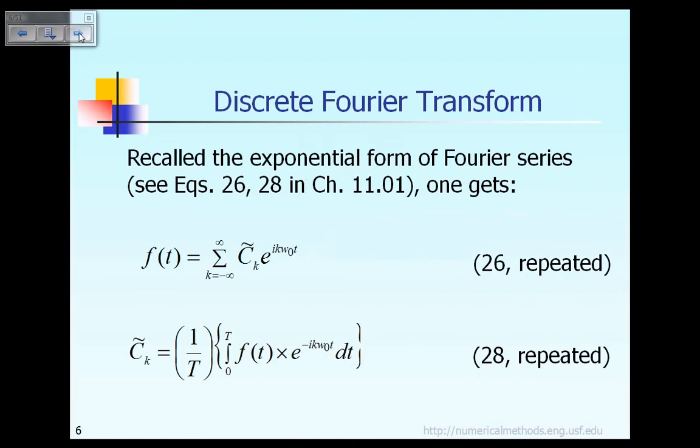Let me refresh your memory by reminding you that we can express any periodic function in the exponential form. Basically it says a periodic function f(t) can be expressed in the exponential form e raised to the power i k omega naught t, multiplied with unknown complex number c tilde k. As shown earlier in equation 26 that I repeated here. The unknown complex number c tilde k can be given according to equation 28 that I mentioned to you earlier, that I repeated here.